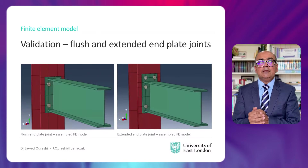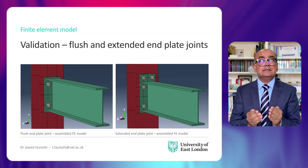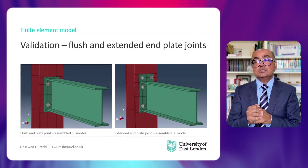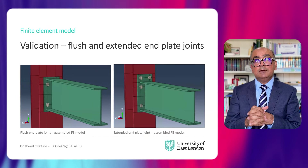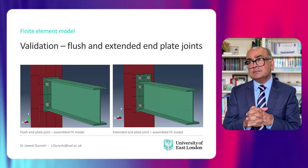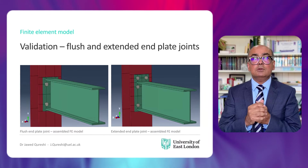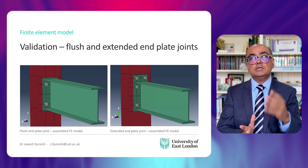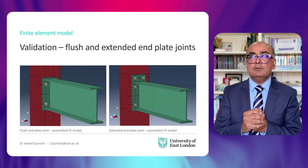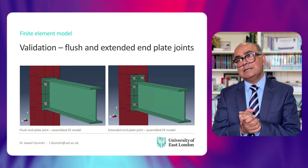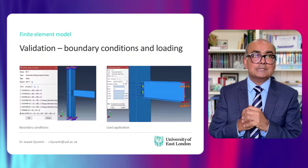This slide shows the details of the finite element model for flush and extended end plate joints. Solid brick elements were used in Abaqus. Mesh sensitivity analysis was also carried out, and the mesh size was chosen based on a compromise between computational efficiency and reasonable accuracy. Further details are given in the full paper, and I'll put the link in the description below.